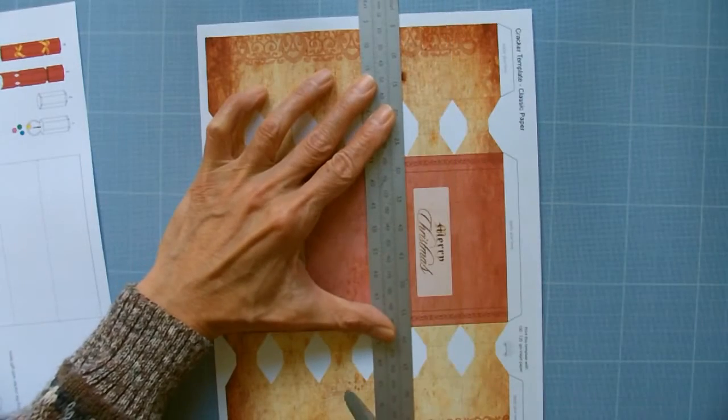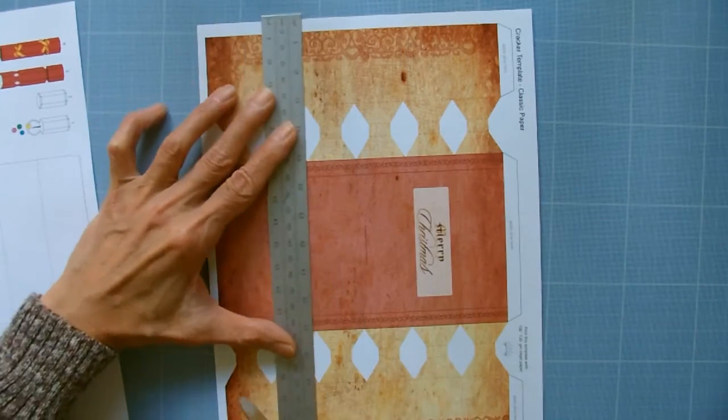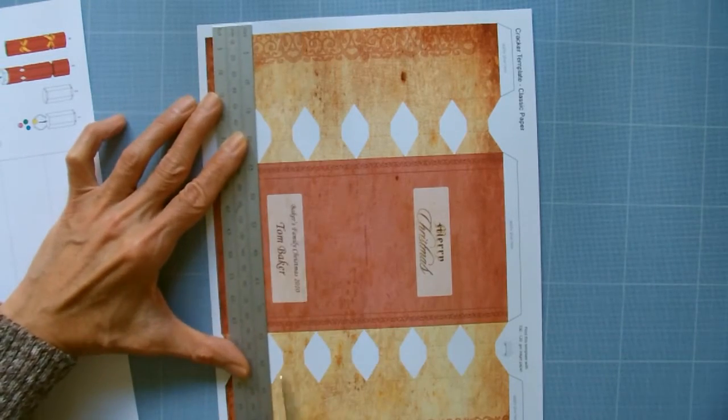Firstly, follow all the dotted lines and the fold lines. Use the blunt knife and steel ruler and score the cracker template.